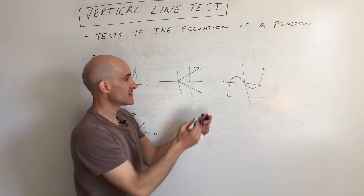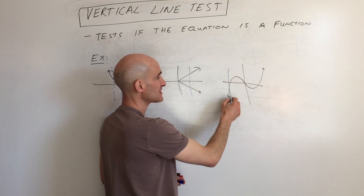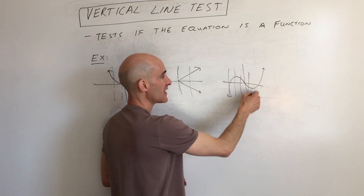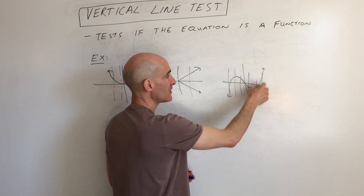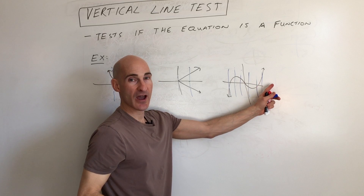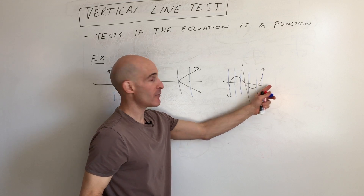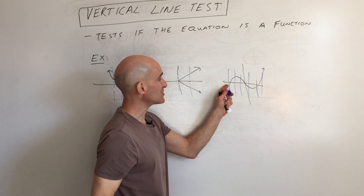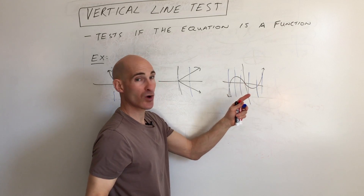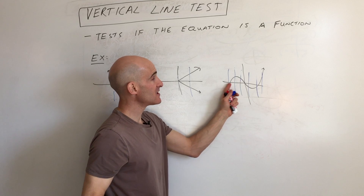This one here — same thing. We draw vertical lines as we scan from left to right and it never crosses the graph at more than one point. It's just one, one, one — at most once. So this one is a function.